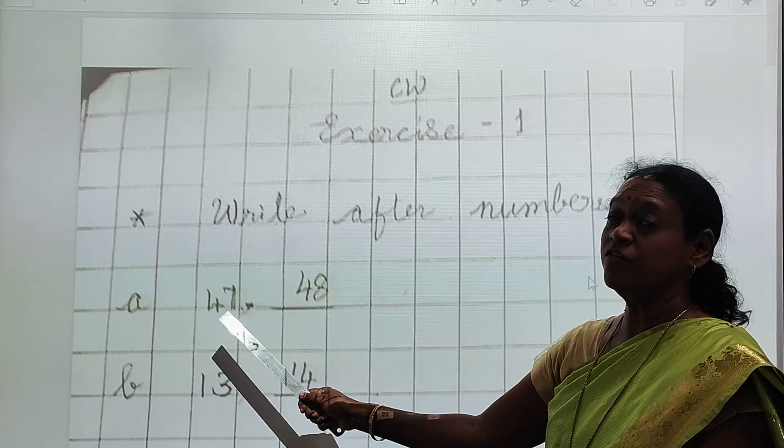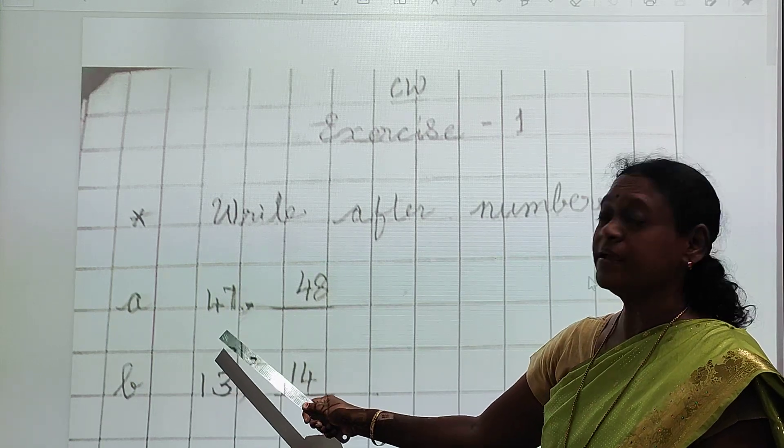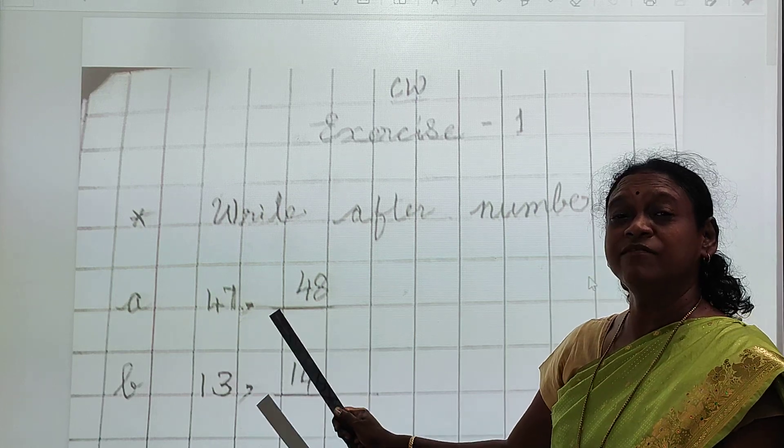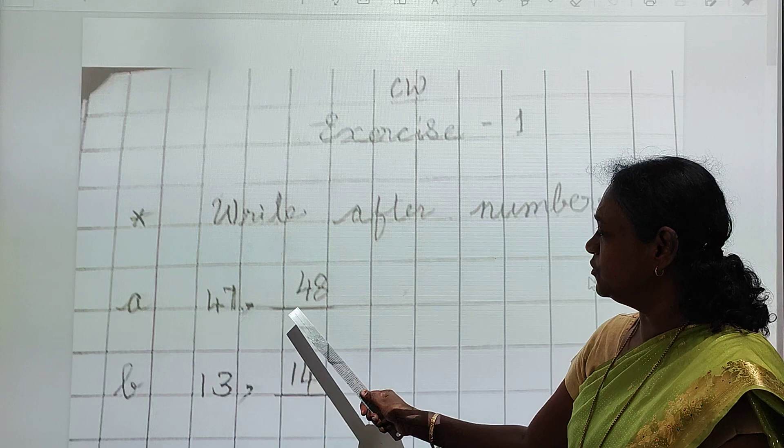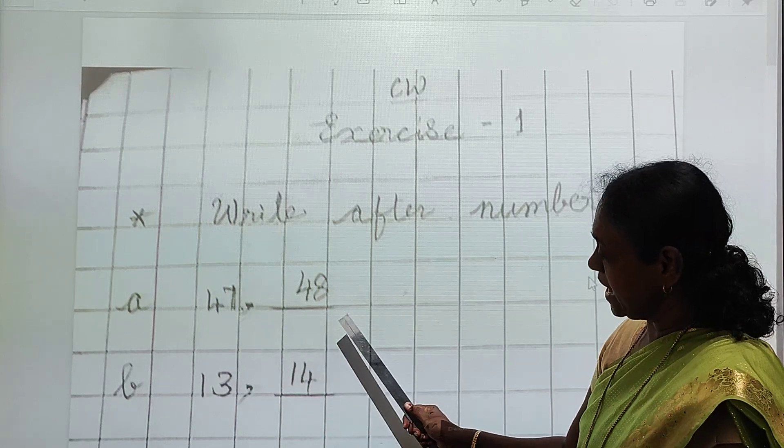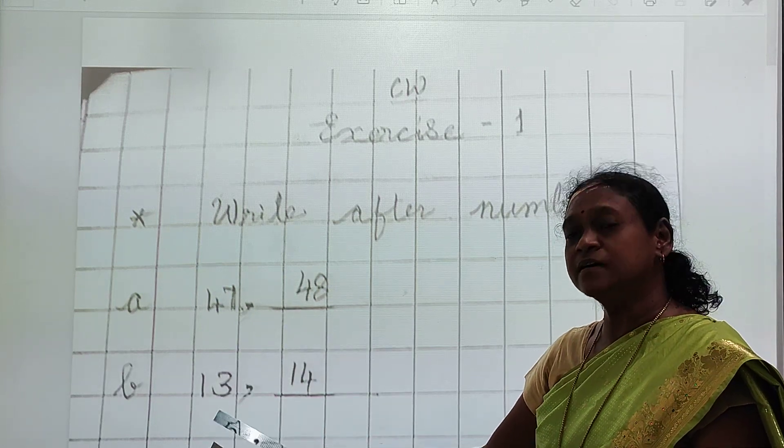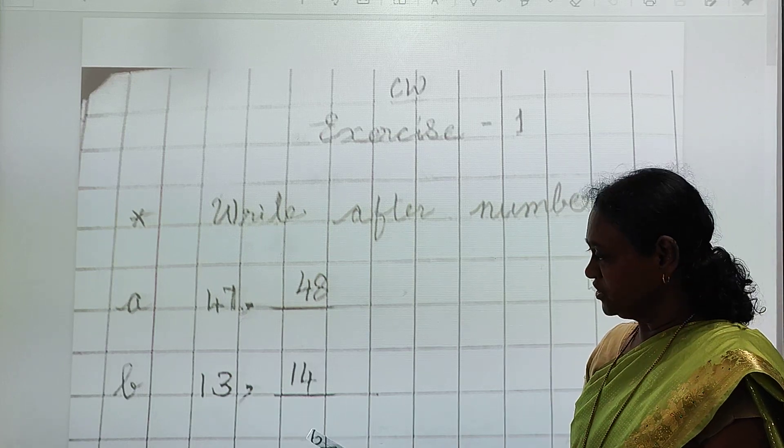So what is this children? 47. You have seen what is after numbers? After numbers means after numbers. So 47, 48. Second number is 13. 13 ke baad kya aata hai? 14.